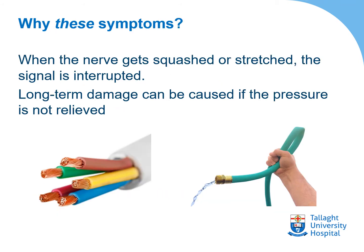So why these symptoms? Basically, if you think of that covered passageway — when the nerve gets squashed, trapped, or stretched within that passageway, the signal is interrupted. Think of your garden hose: if it's stood on, the flow of water is interrupted; if somebody puts a bend in it, the flow of water is interrupted. Similarly with your electricity supply — if it's cut at one point, the signal no longer travels beyond that point. It's important that we try to relieve the pins and needles in your hand, because long-term damage can be caused if the pressure is not relieved.